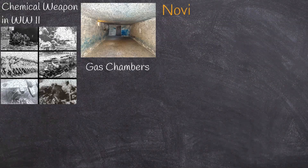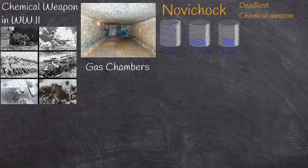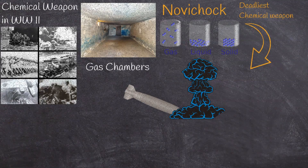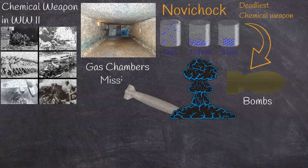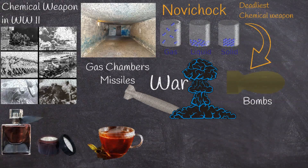On the other hand, Novichok is the most potent and deadly chemical weapon ever made. It was created in the Soviet Union. It can be used in war as aerosol, gas or liquid, and delivered via artillery shells, missiles or bombs. Or, it can be used for personal attack, with delivery methods including perfume, aftershave bottle, or as tea.